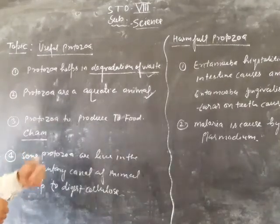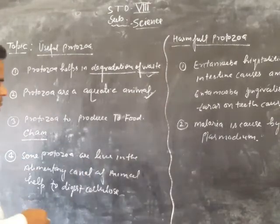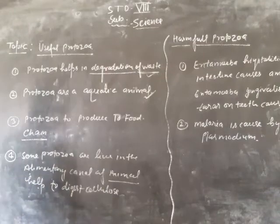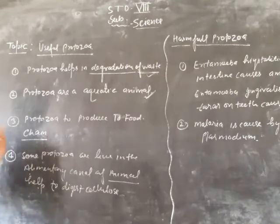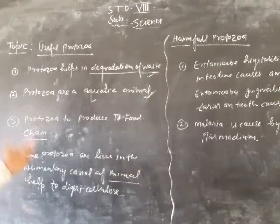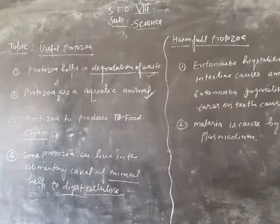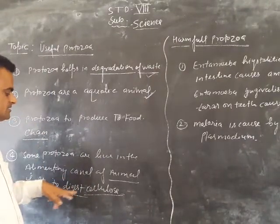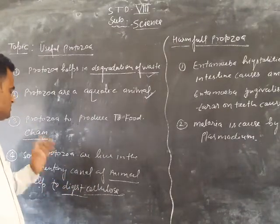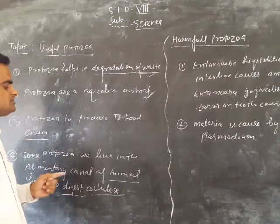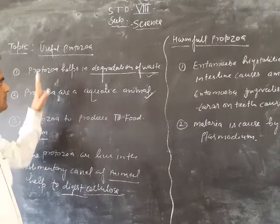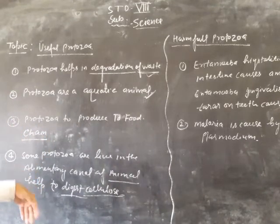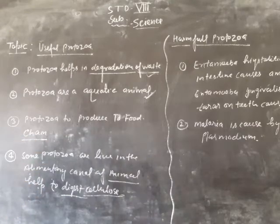Next, some protozoans live in the alimentary canal of animals. All the animals — that is the buffalo, that is the cow, that is the goat — digest cellulose. Some protozoans are found in the alimentary canal which help to digest the cellulose for these different animals.